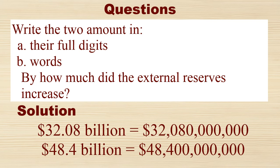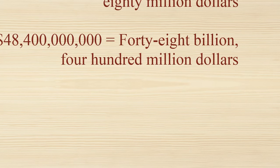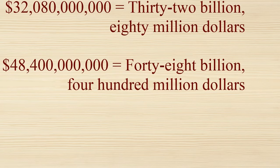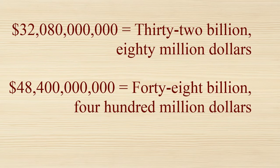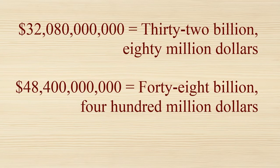Solution. Since it is in billions, then that group of digits has to be 4. That is to say, $32,080,000,000 as you are seeing on your screen. And the second one, $48,400,000,000.